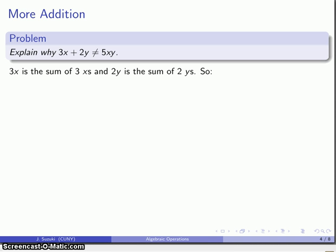Well, it's pretty easy to see why if we go back to what these mean. 3x is 3 x's, 2y is 2 y's. So this sum here, 3x and 2y, I can write it out this way.